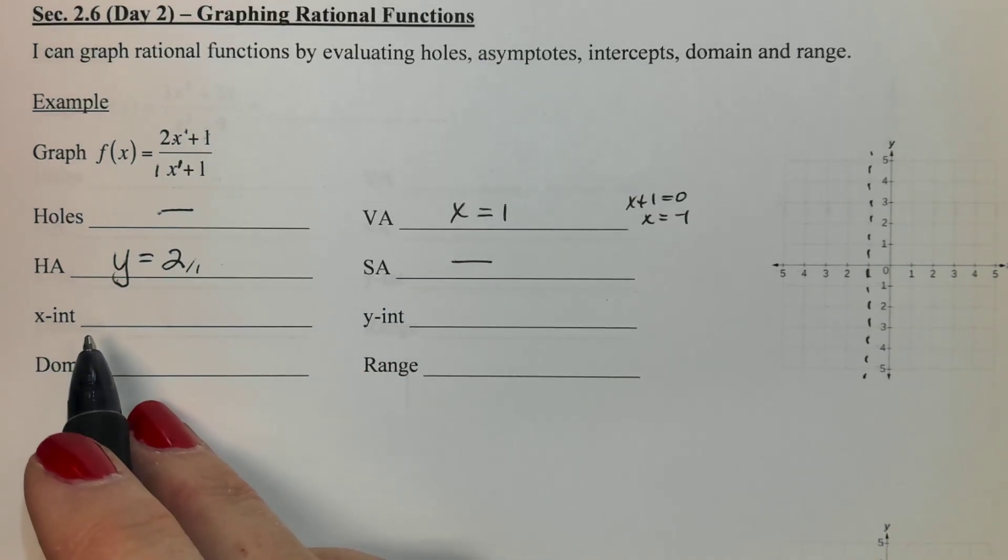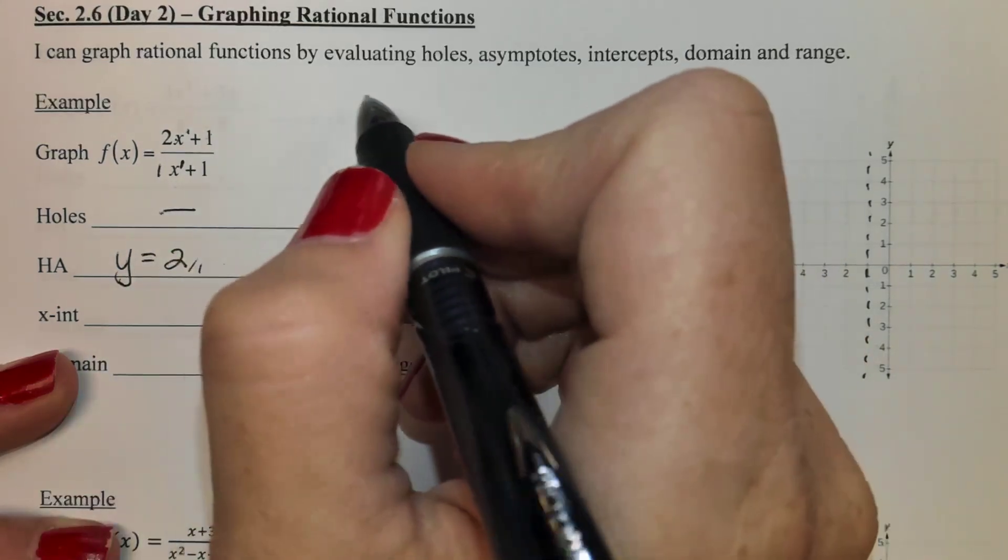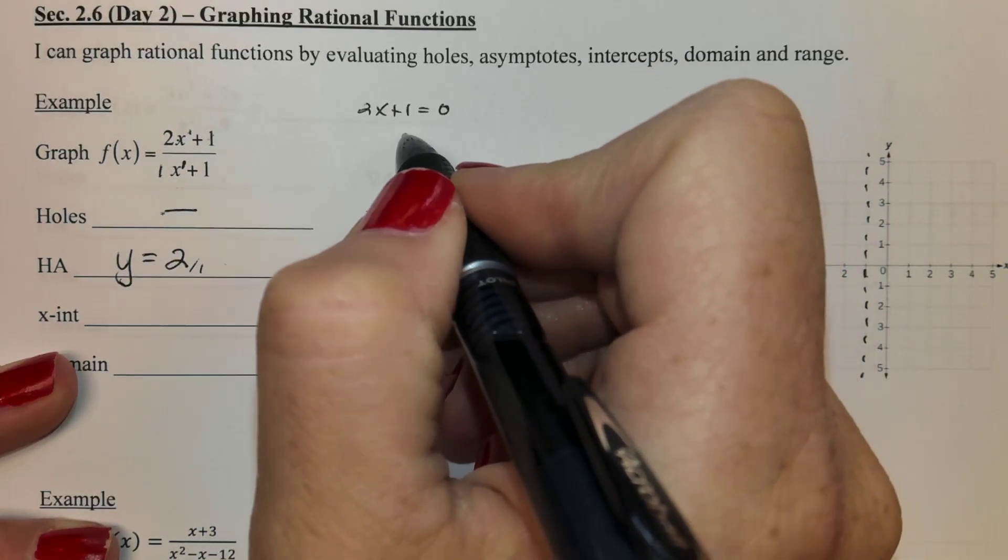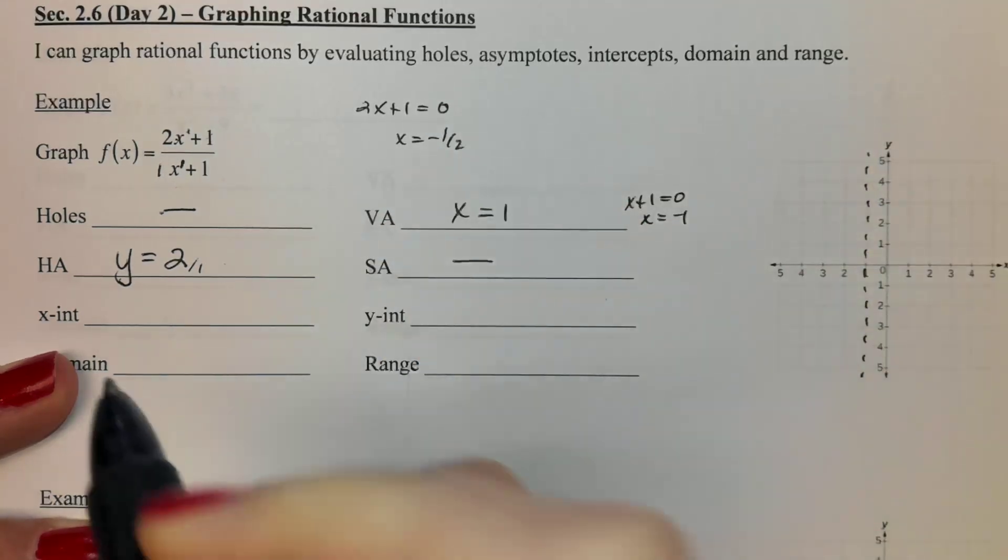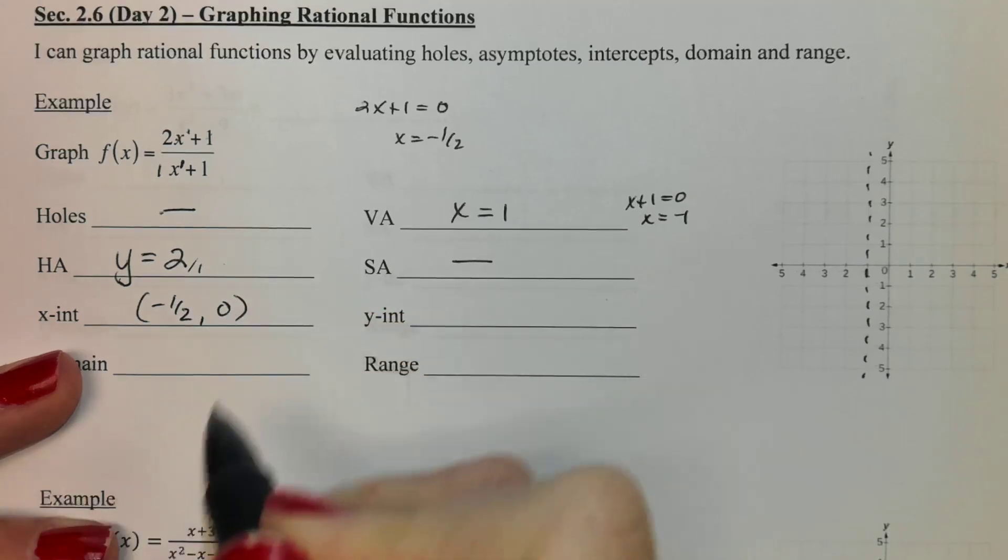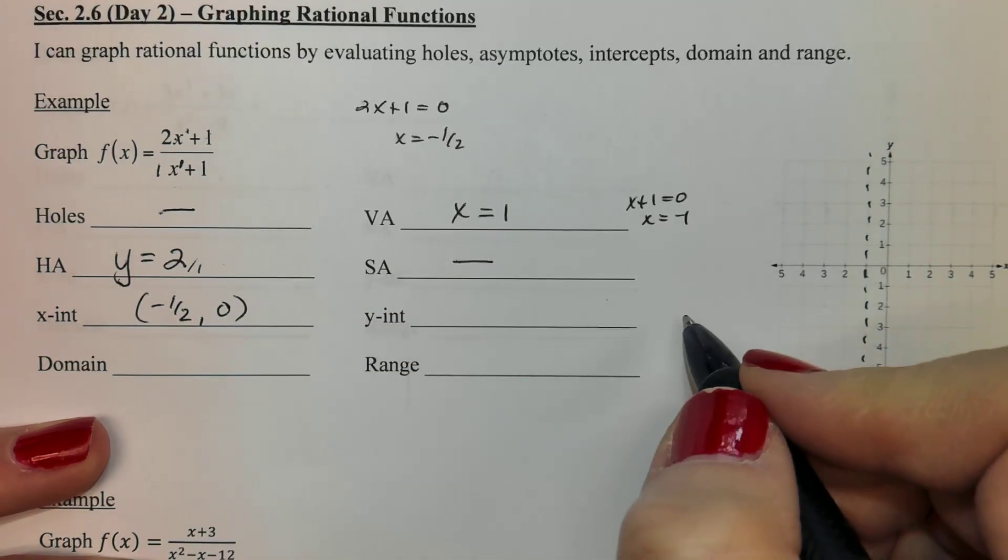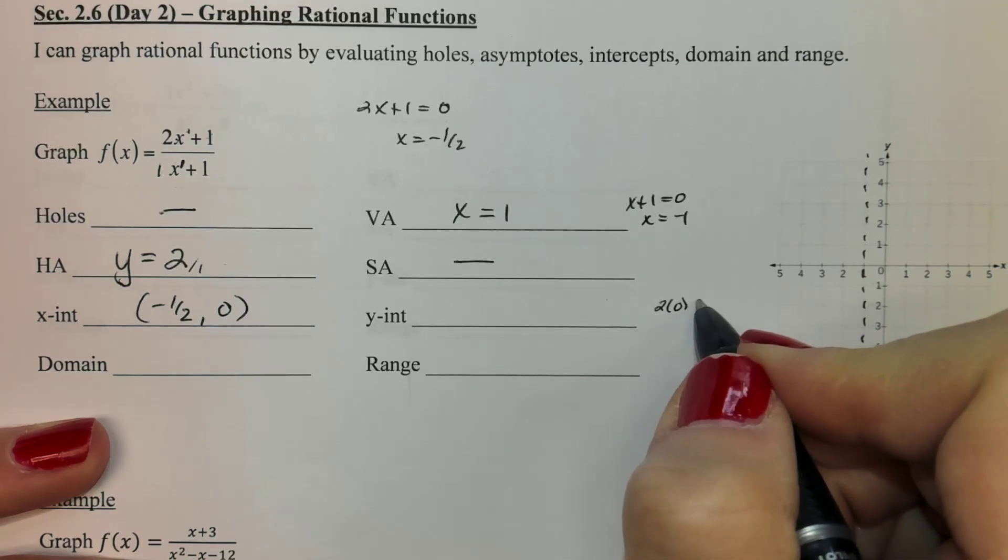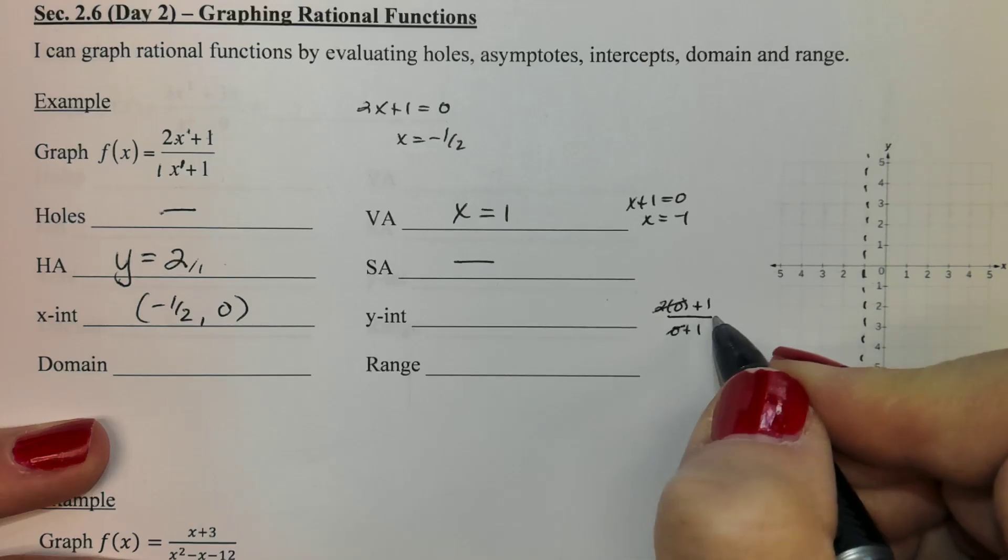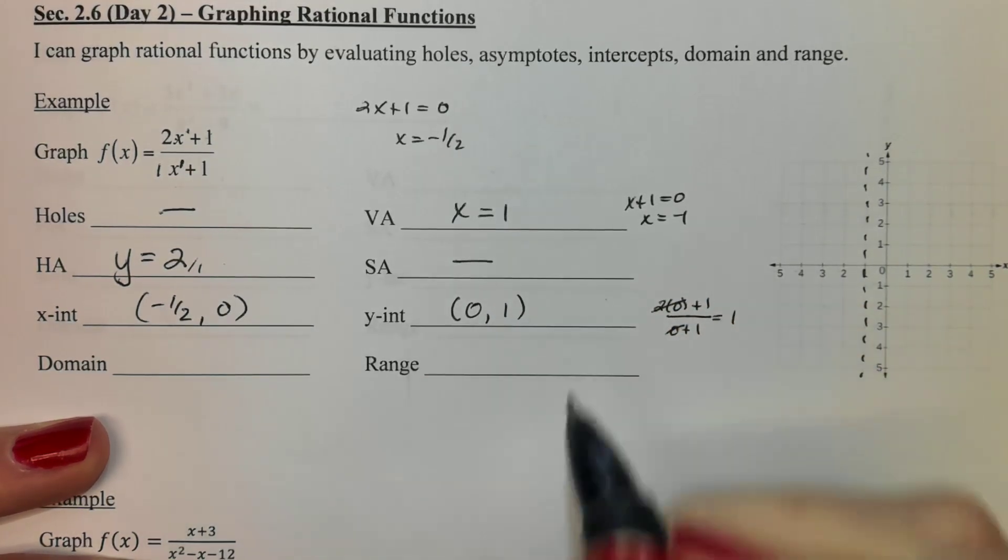Your x-intercept happens when you solve when the numerator equals zero. So I'll just take my numerator 2x plus 1, set that equal to zero. Minus the one divide by two. Looks like my x-intercept is at negative half. So that would be negative half, zero. That's my intercept. To find a y-intercept we just plug a zero in for all the x's. So if I did two times zero plus one and a zero plus one. So this is zero. Looks like it's just one over one. So my y-intercept is zero, one.